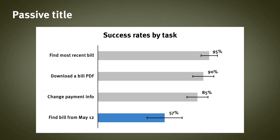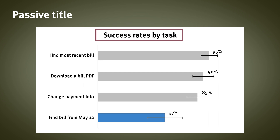Sticking with our quantitative usability testing example, we have a very bland, uninformative title: Success Rates by Task. If our goal is to show that one of the tasks had much lower success rates than the others, all we have to do is say that in the title.